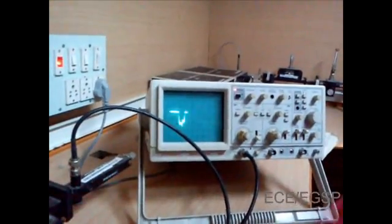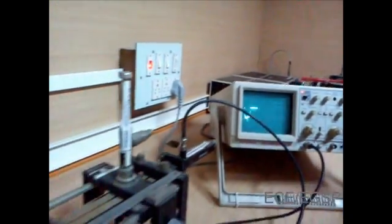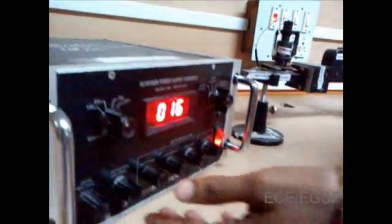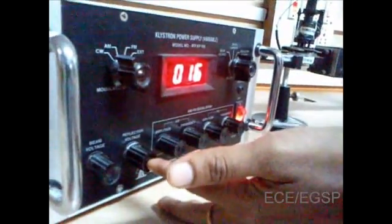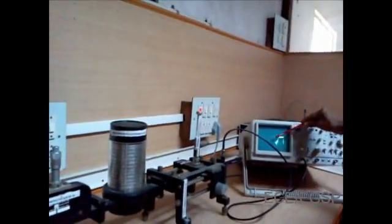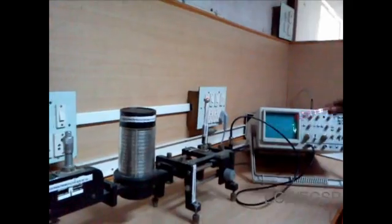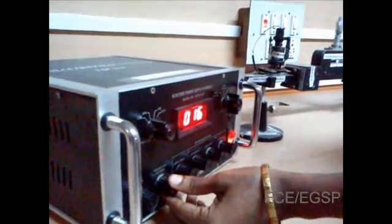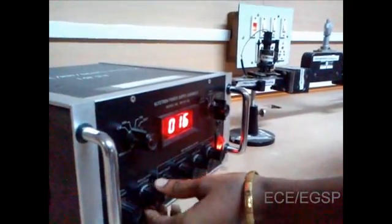For the Reflex Klystron Characteristics Experiment, you get three sets of readings. That is, reflector voltage reading, frequency reading, and maximum voltage level. Now, I am going to show you how to take readings for one set by adjusting the reflector.